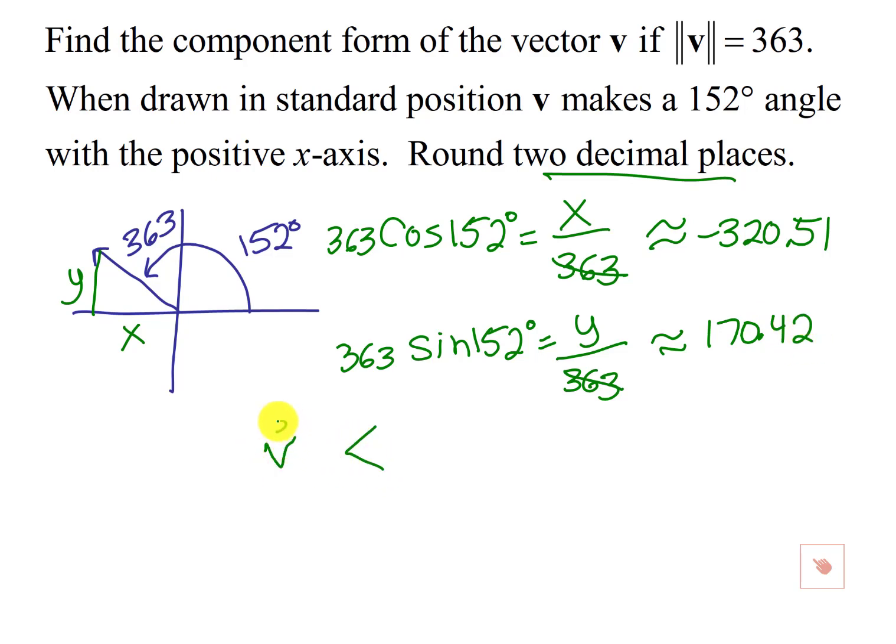So we list the vector v in component form, negative 320.51 comma 170.42.